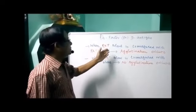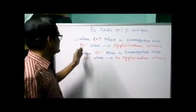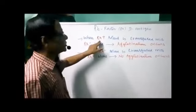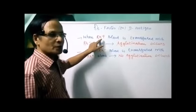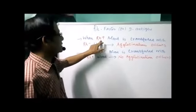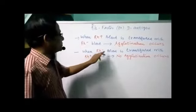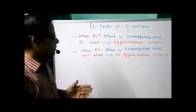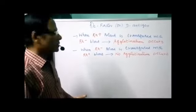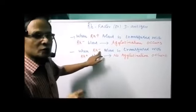When Rh positive blood is transfused to an Rh negative person — that is, donation of Rh positive blood to an Rh negative person — agglutination occurs because we are introducing the antigen into the recipient. In blood transfusion, the donor should not contain the antigen. But here we have the antigen, and that is why it causes agglutination. However, when Rh negative blood is transfused to an Rh positive person, no agglutination occurs because we are not introducing any foreign antigen.